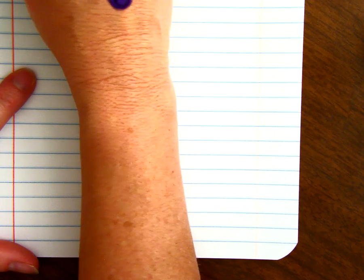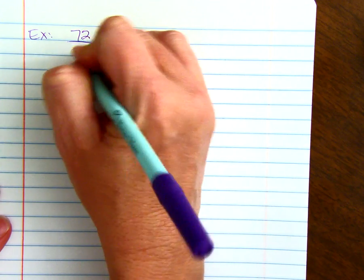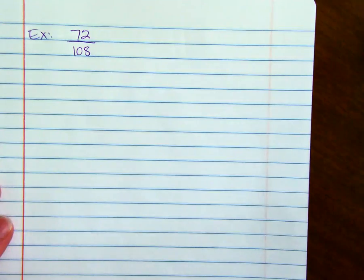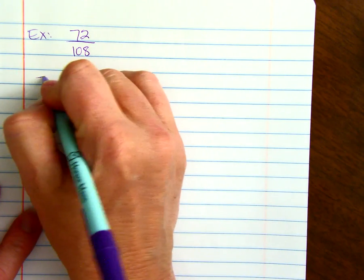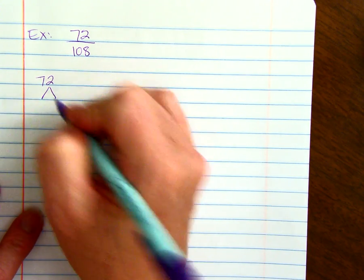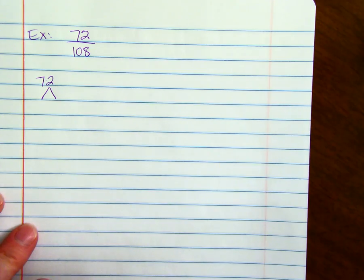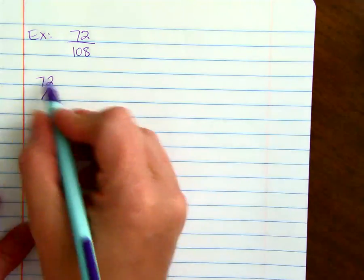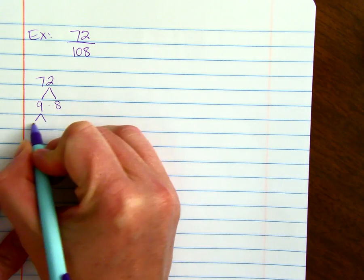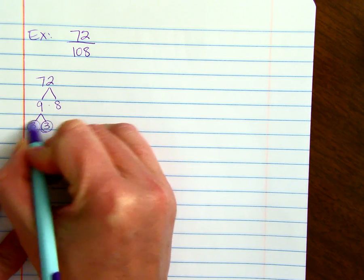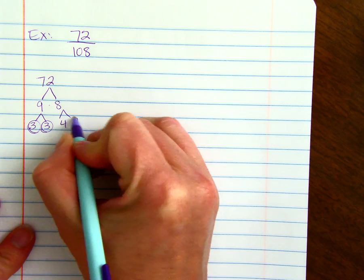For example, if we wanted to reduce 72 over 108, those are a little bit bigger numbers. You might see right away that 12 goes into both, but let's pretend you didn't. We could do the factor tree and say 72 is 9 times 8, 9 is 3 times 3, 8 is 4 times 2.